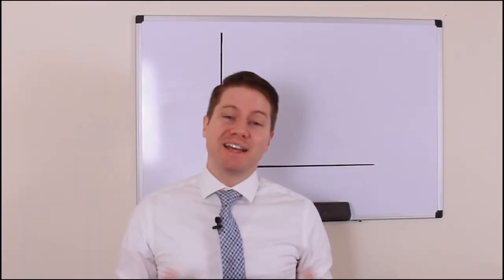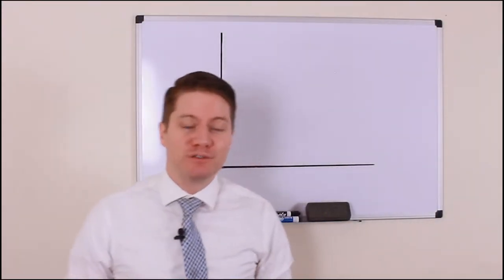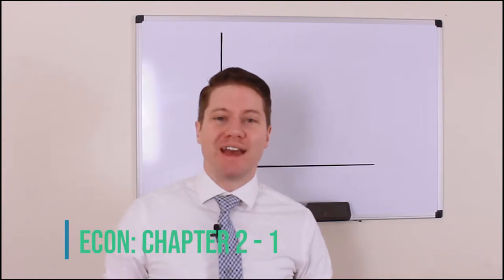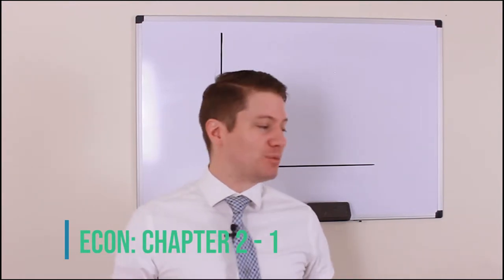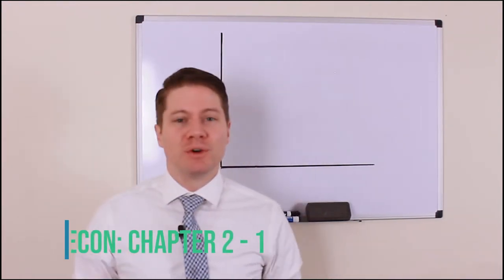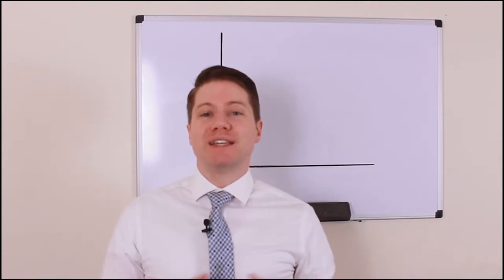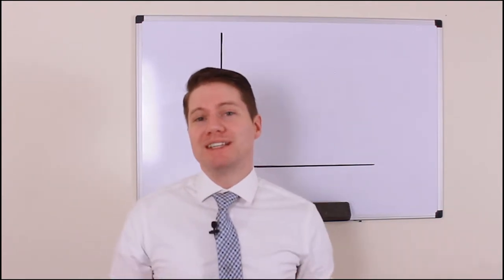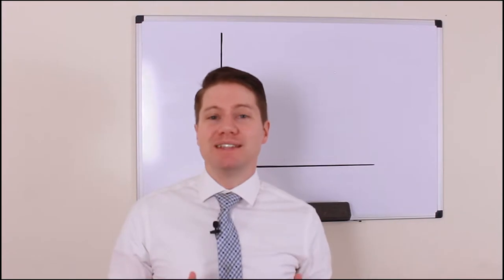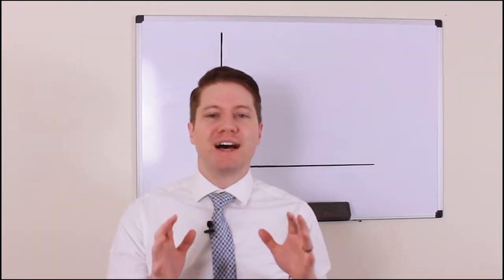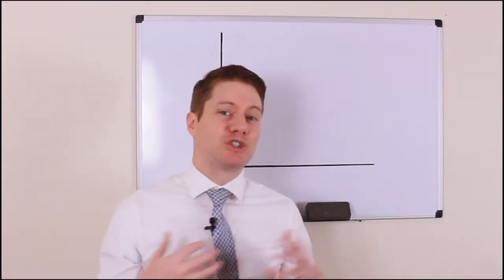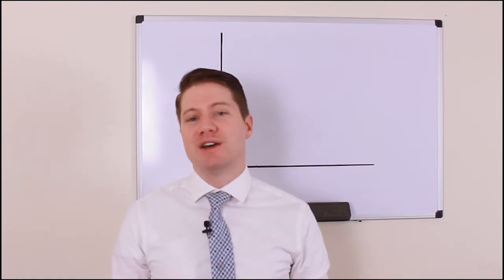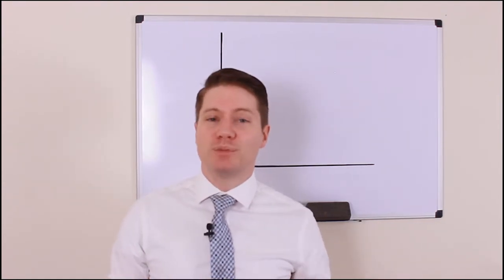How's it going, Urshan College? My name is Brandon Flynn and today we're going to go over chapter two of economics in your book by Paul Krugman. What we're going to talk about is the production possibility frontier, which is going to simplify what it means to have gains from trade — one of the 12 principles of economics from your book.